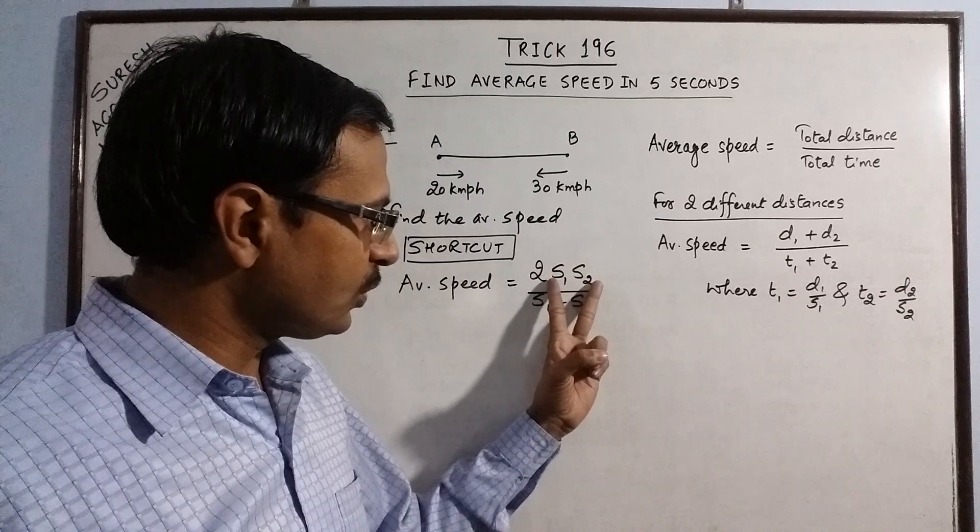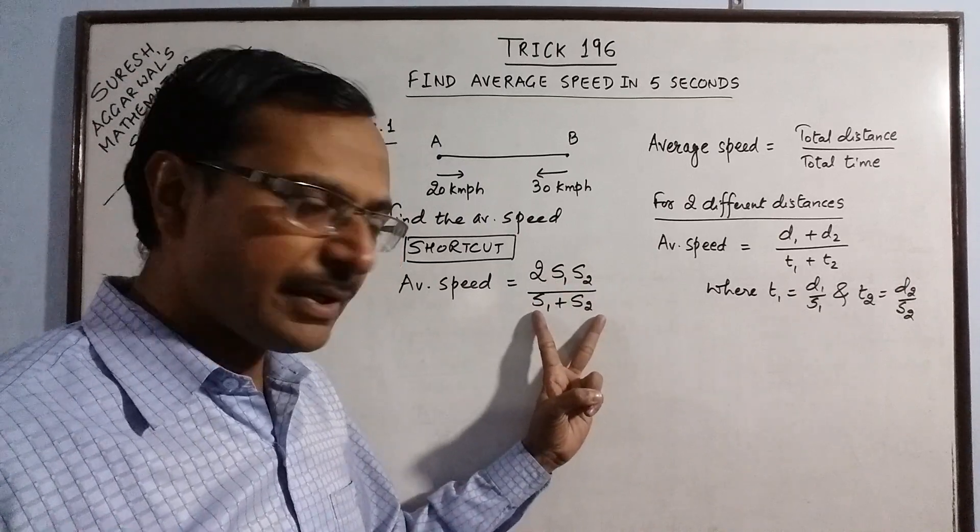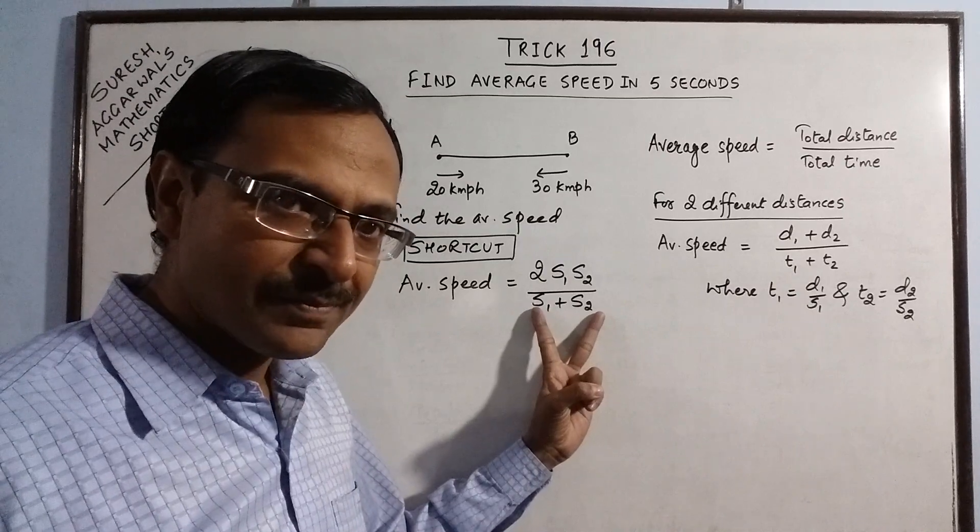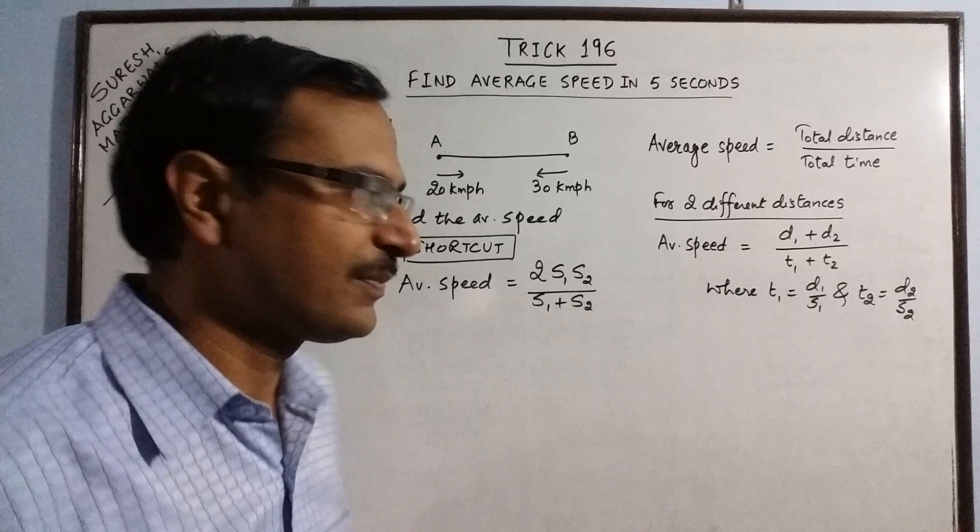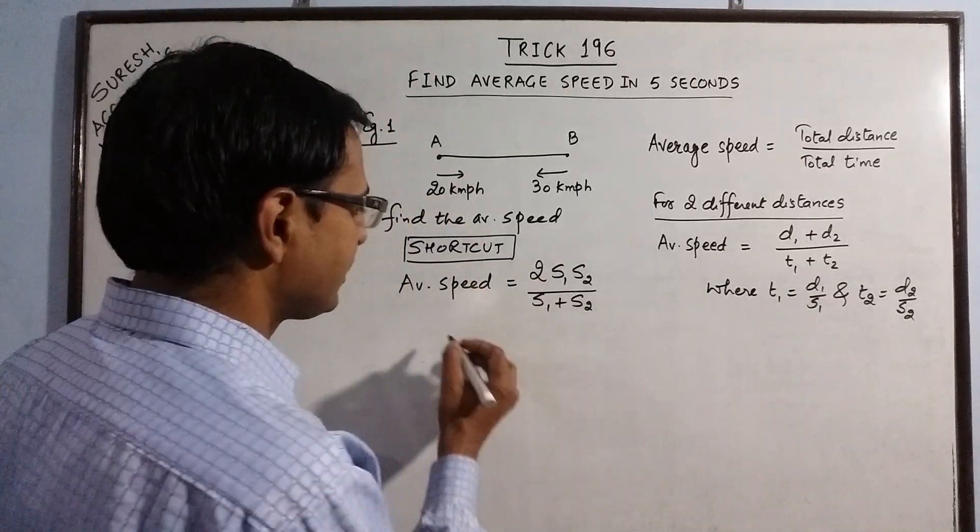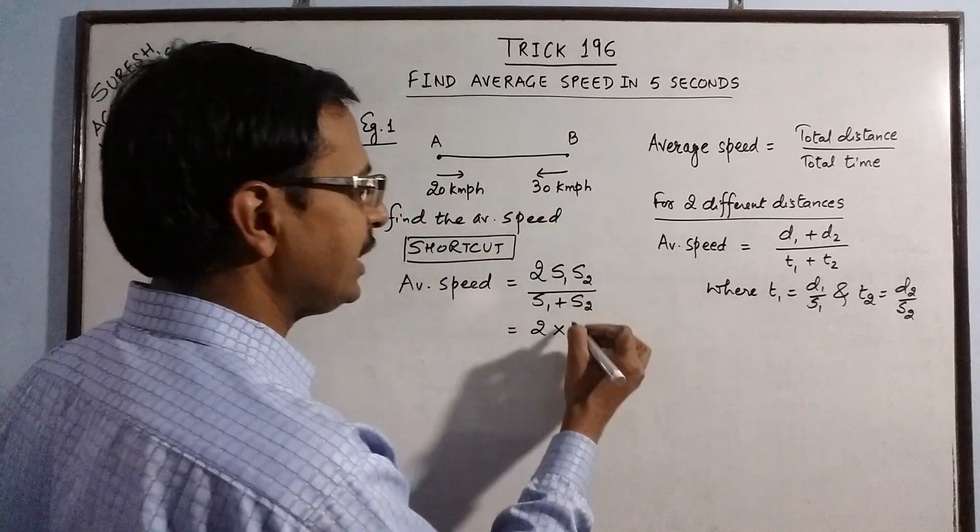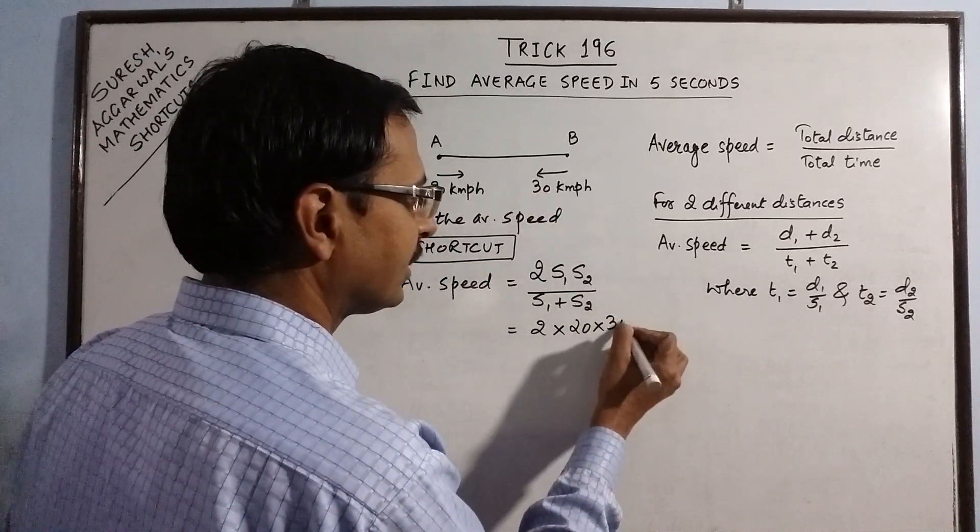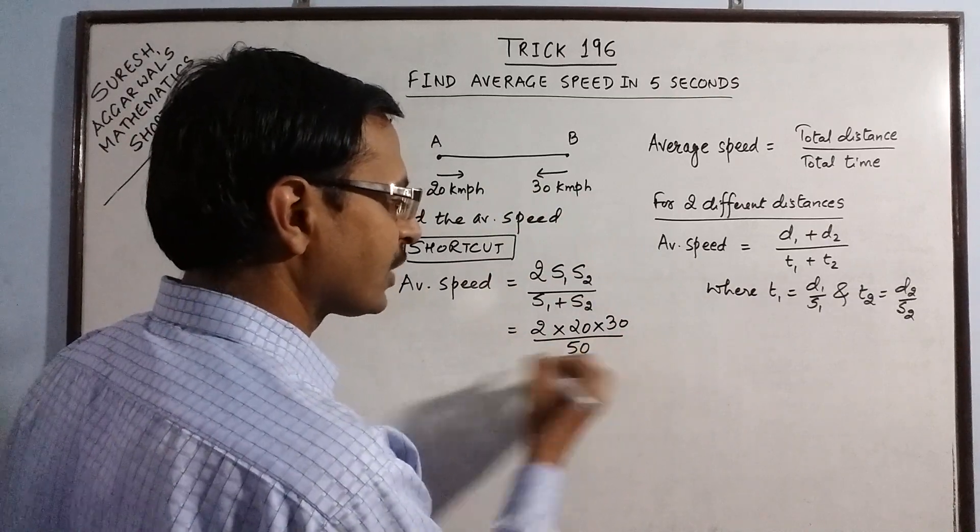So, this can also be remembered by this. You have to take the product of the speeds divided by the sum of the speeds and double the result. You get the average speed. Now, for this question, average speed will be twice of the product of the speeds 20 into 30. And obviously, the sum of speeds 20 plus 30 is 50.